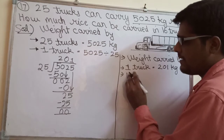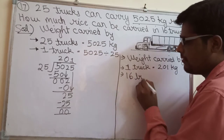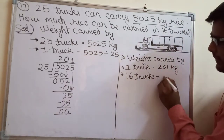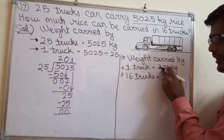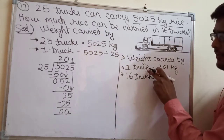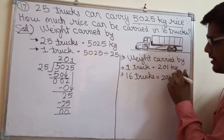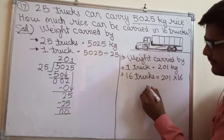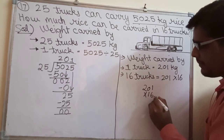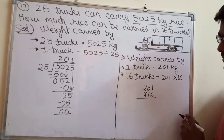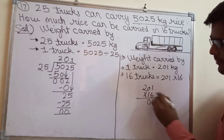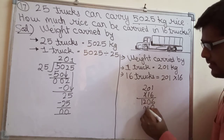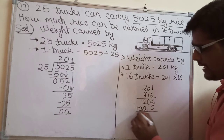Weight carried by 16 trucks — here you will multiply. We need to find the weight, so the kg of rice that goes in one truck, multiply that by 16. Why multiply by 16? Because we need to find the weight for 16 trucks. So 201 multiplied by 16: 6 ones are 6, 6 zeros are 0, 6 twos are 12. Put 0 here. 1 one is 1, 1 zero is 0, and 1 two is 2.